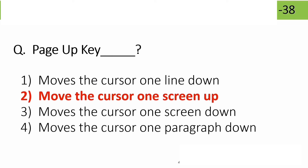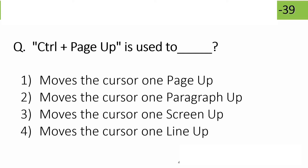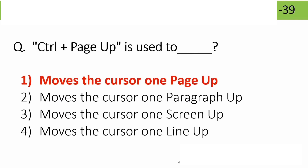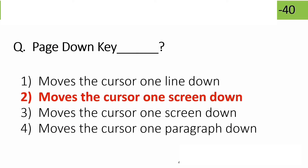What is the shortcut key to move the cursor one screen up or down? Options: Ctrl+Page Up, Ctrl+Page Down. Ctrl+Page Up moves one screen up, and Ctrl+Page Down moves one screen down.